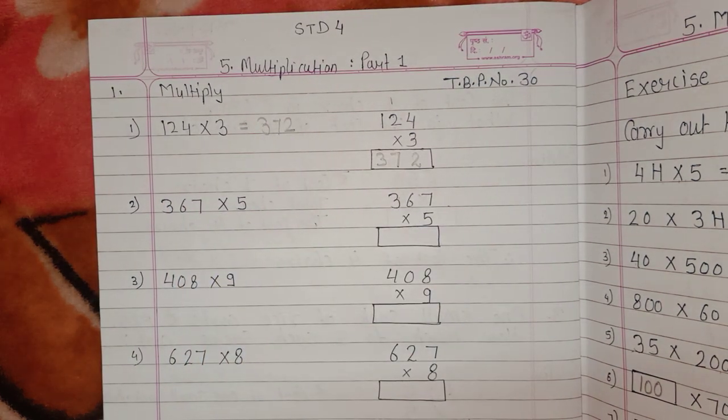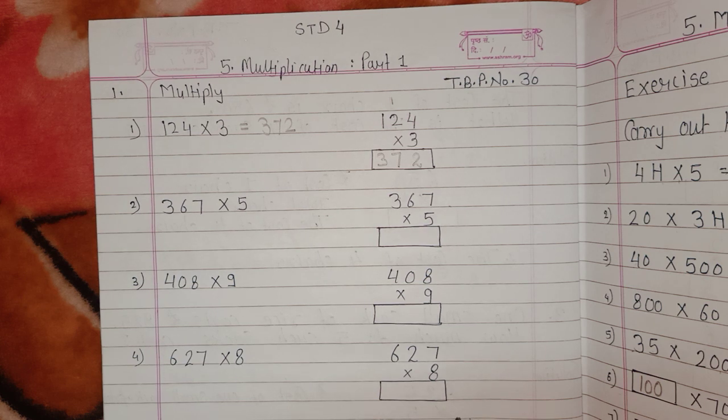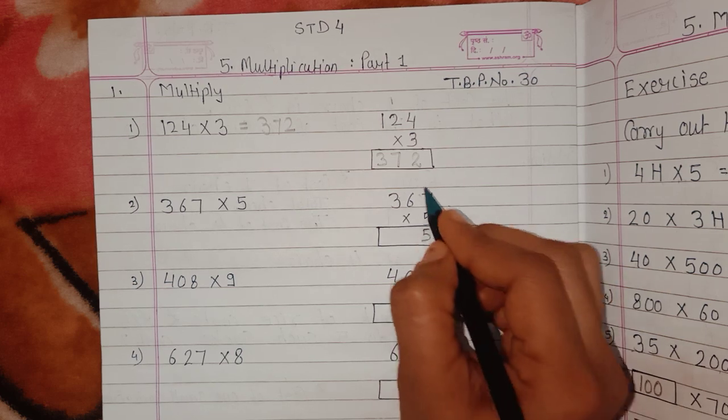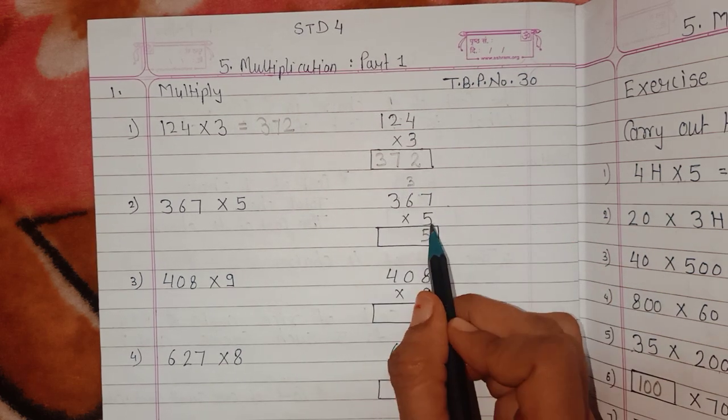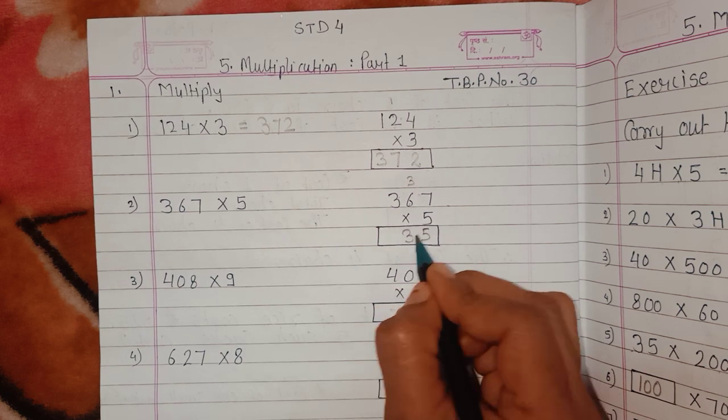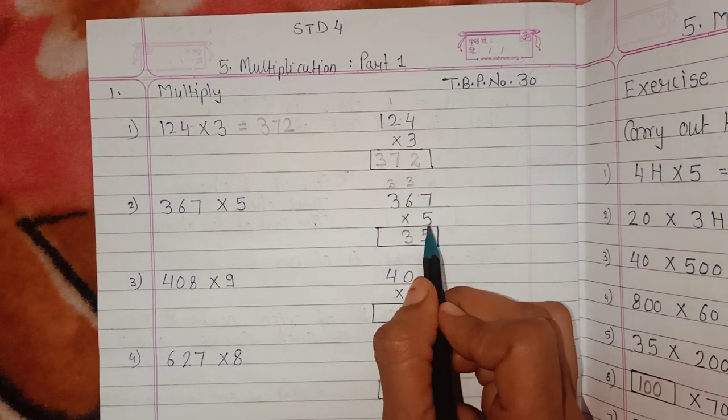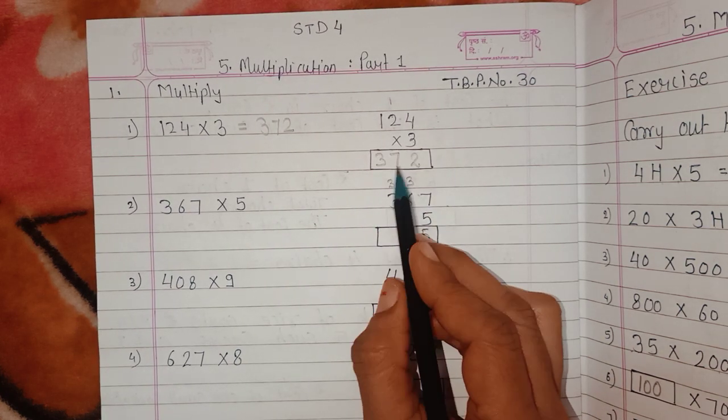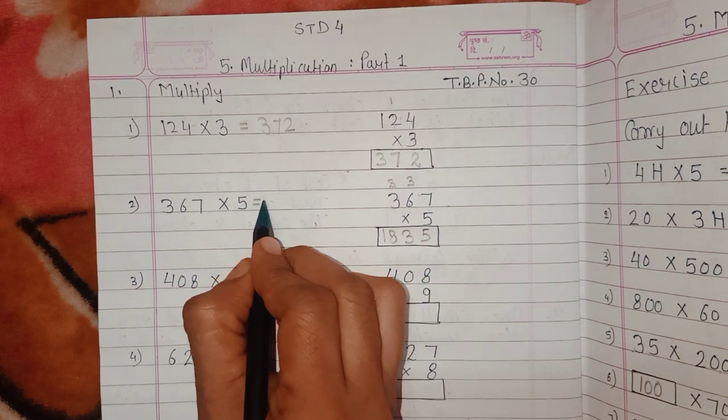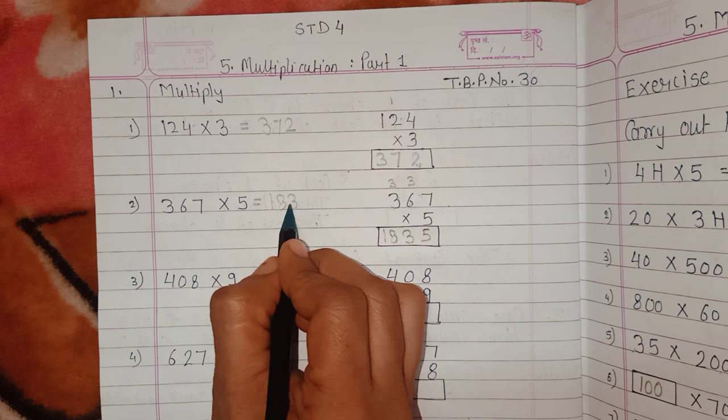Now, second question: 367 multiplied by 5. 5 times 7 is 35, so 5 here, carry 3. 5 times 6 is 30, plus 3 is 33, so 3 here, carry 3. And 5 times 3 is 15, plus 3 is 18. So the answer for the second question is 1835.